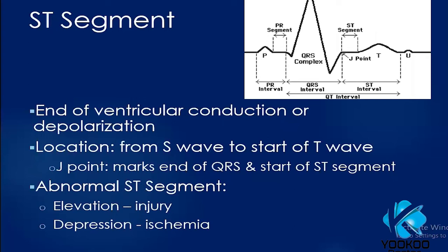The ST segment follows the QRS complex, representing the end of ventricular depolarization. It is located from the S wave to the start of the T wave. The junction point is called the J point, which marks the end of the QRS complex and the start of the ST segment. Abnormal ST segments are very important — ST elevation indicates myocardial infarction, while ST segment depression indicates ischemia.